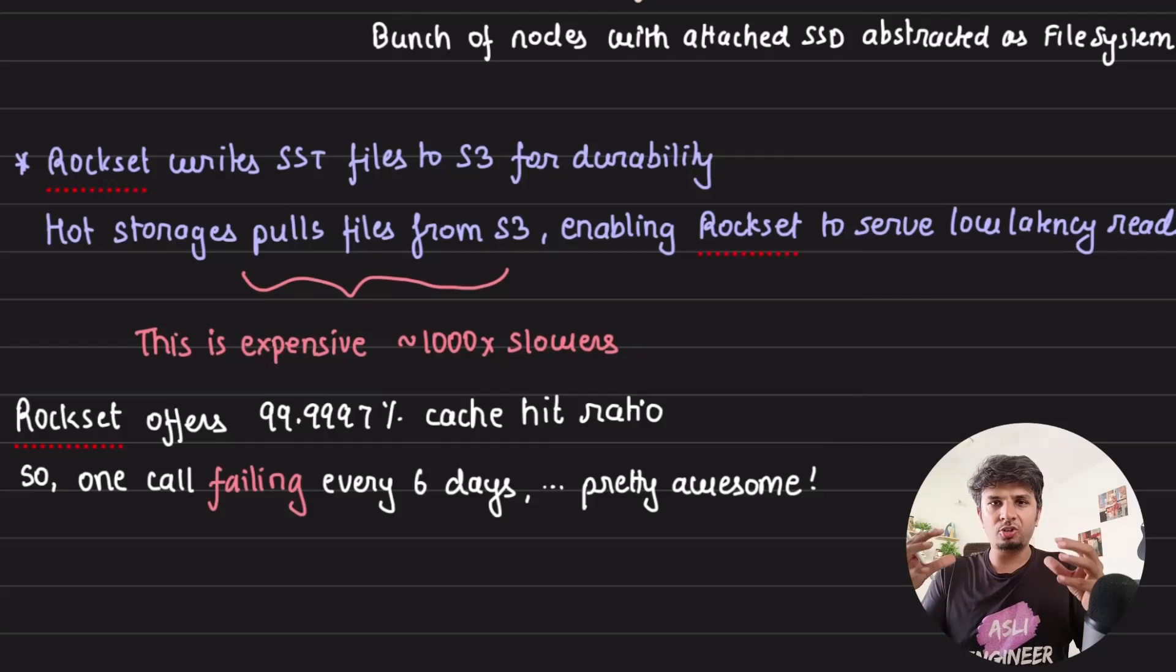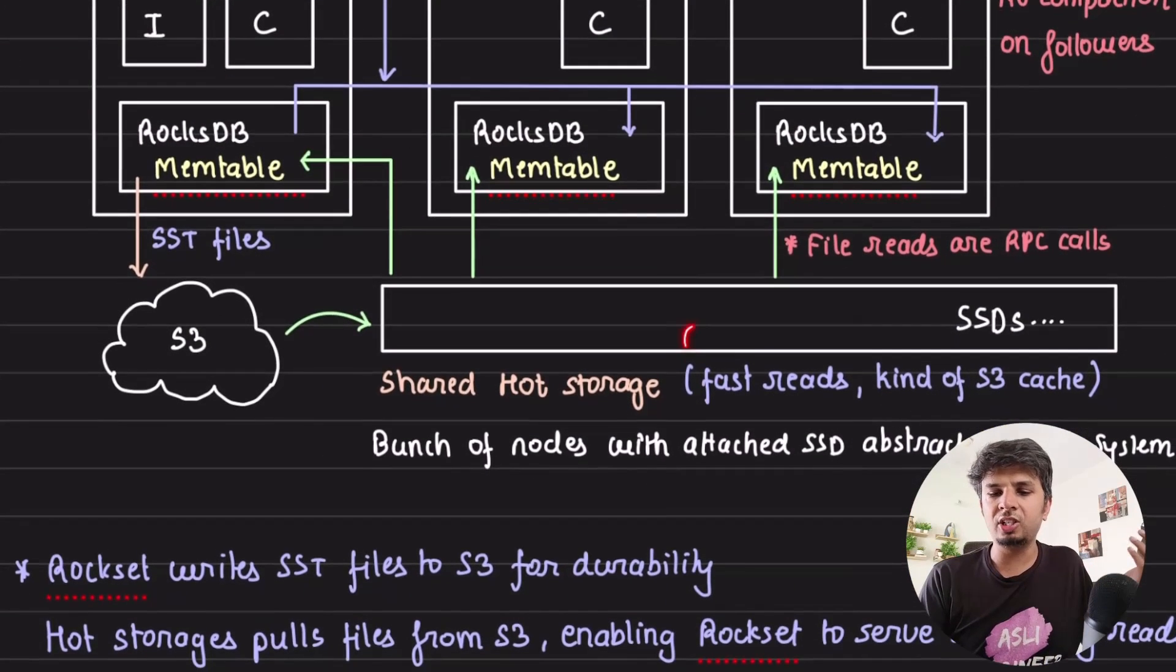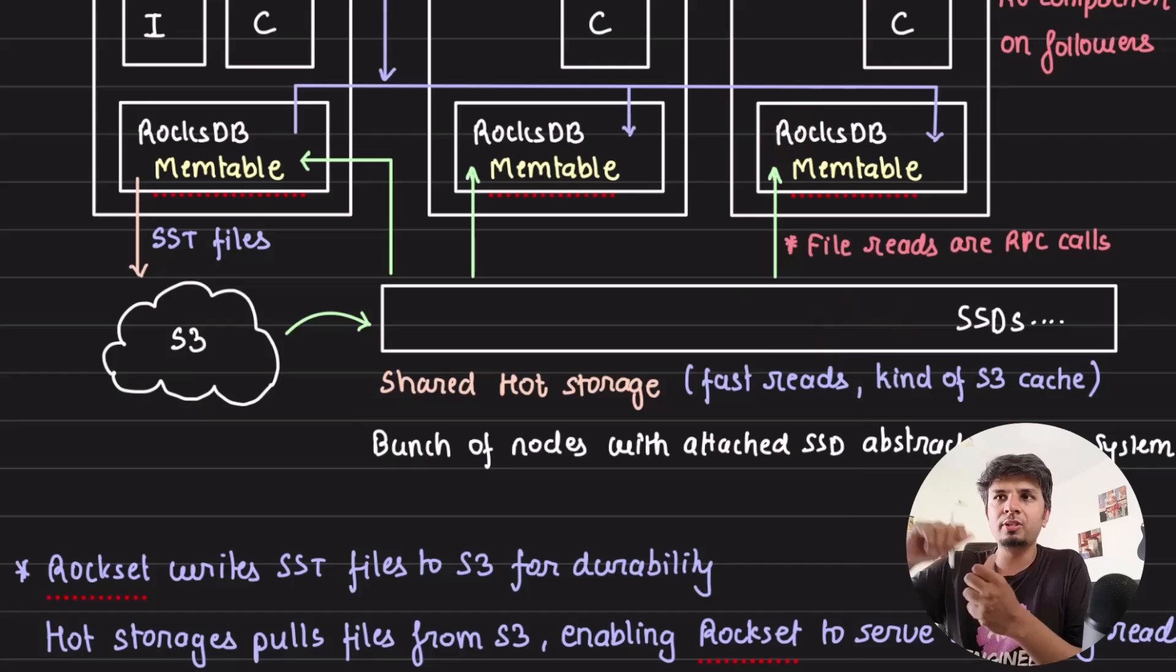So they're still using S3 for durability. They have a hot storage, a distributed file system filled with SSDs as an S3 cache and compute nodes rely on that whenever they are reading the data. And this is how they do compute, compute separation. And they scale compute really well. They scale storage. Storage is basically, there's a distributed file system. They can scale it independently. S3 is where your entire data is anyway stored. This is a hot storage and your compute is scaling. You get isolation. You get everything that you need to offer ultra low latency in response time for any query that is coming while offering query isolation. And this is how they do compute, compute separation.